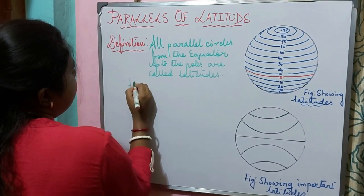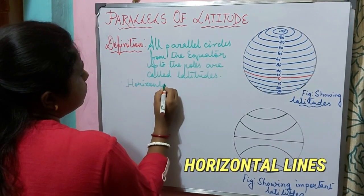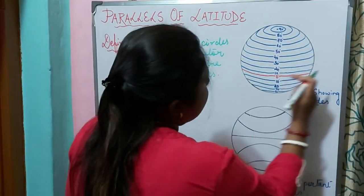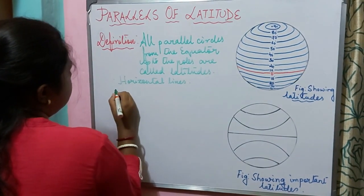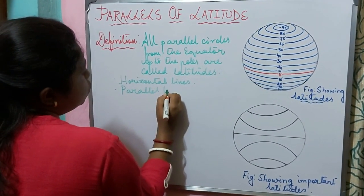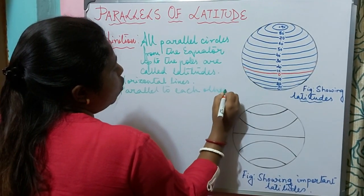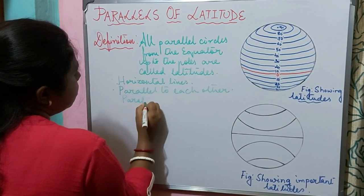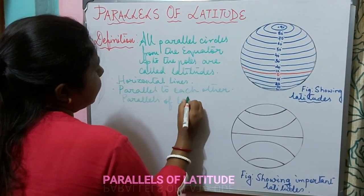We can see that latitudes are horizontal lines. Notice here — they are parallel to each other. So they are also known as parallels of latitude.